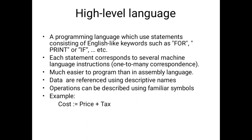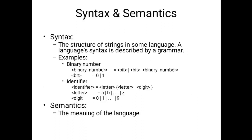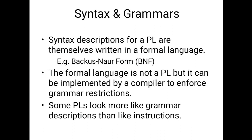High-level language uses alphabet letters and statements consisting of English-like keywords such as 'for' and 'print'. It is meaningful and easy to write. Next is the topic of syntax and semantics. Syntax is the general format you must follow when writing statements in a programming language — it is the structure of strings in a language, described by grammar rules. Semantics refers to the meaning of the language.